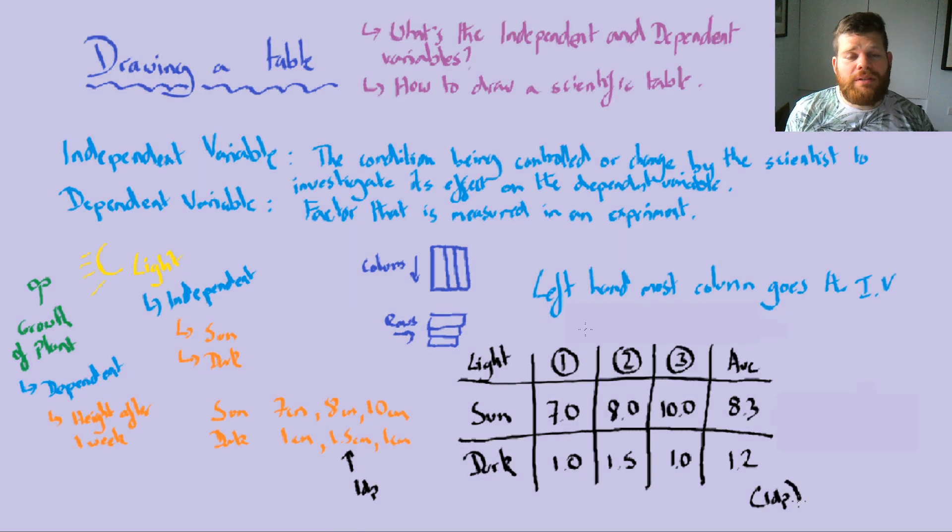So the final thing to do to this table to make it nice and neat is to just write in the title across the top here for our dependent variables, which is the height of plant in centimeters. Now, what you'll notice is you'll notice that my units are up the top here. Within the body of the table, there are no units. There are only numbers. And this is because we like things to be nice and neat. So that's one example of how we can draw a table. Let's have a look at a second one.